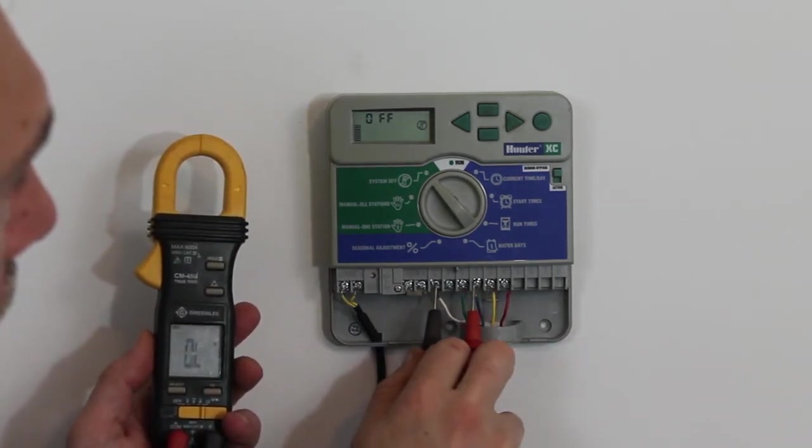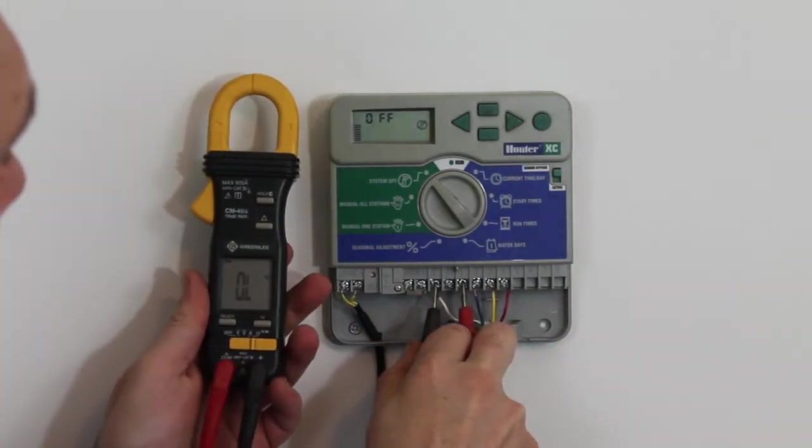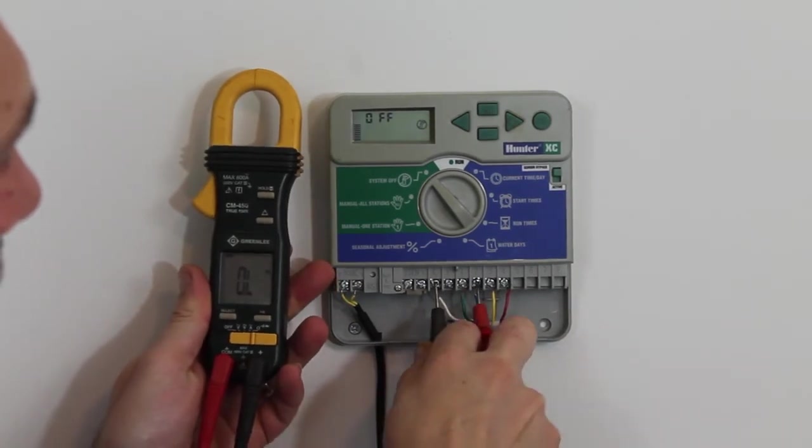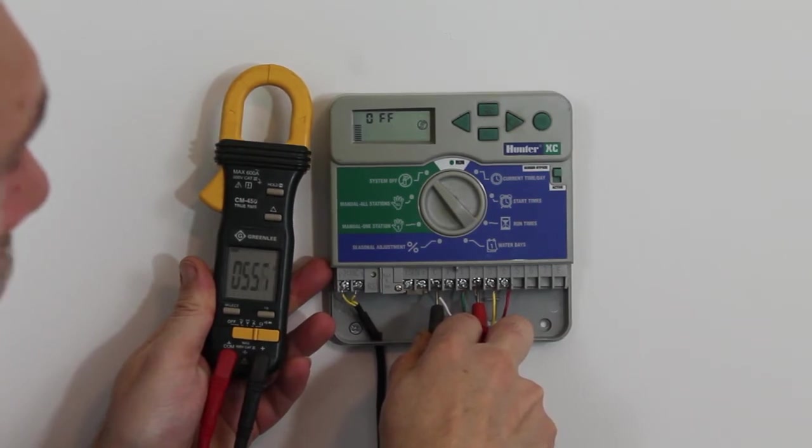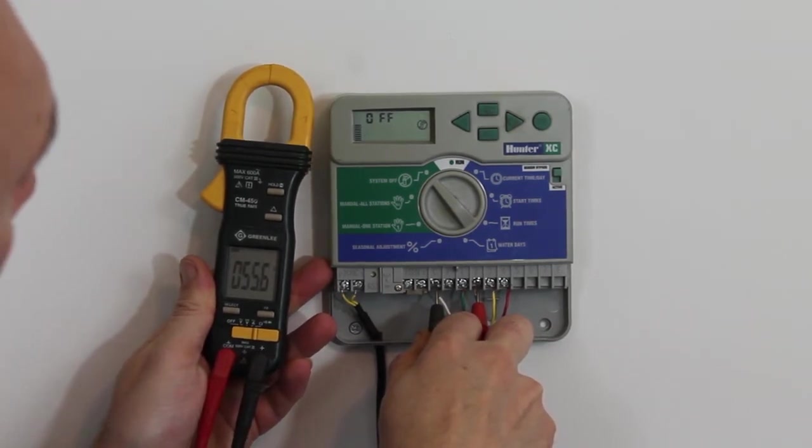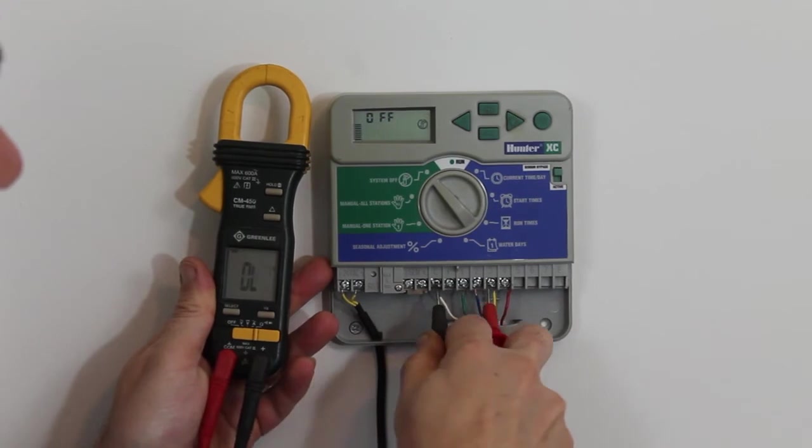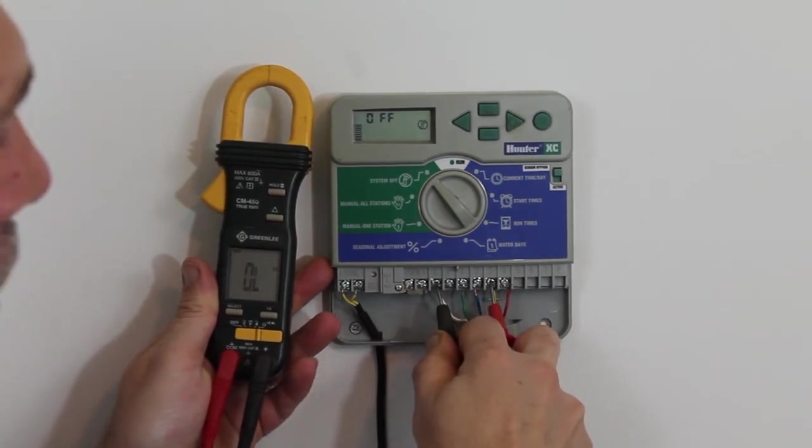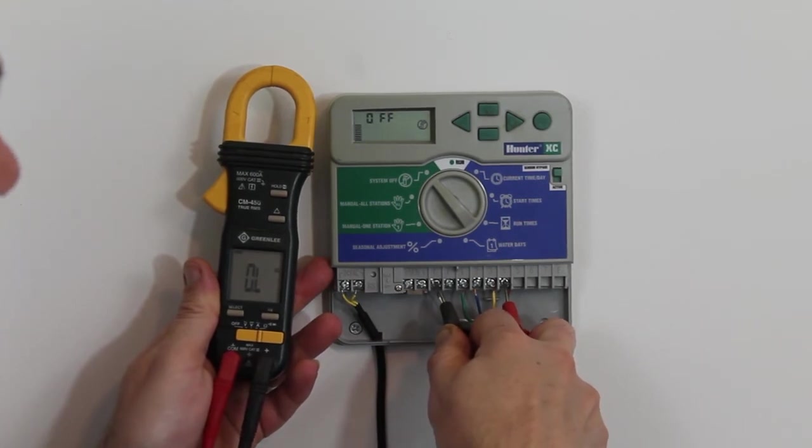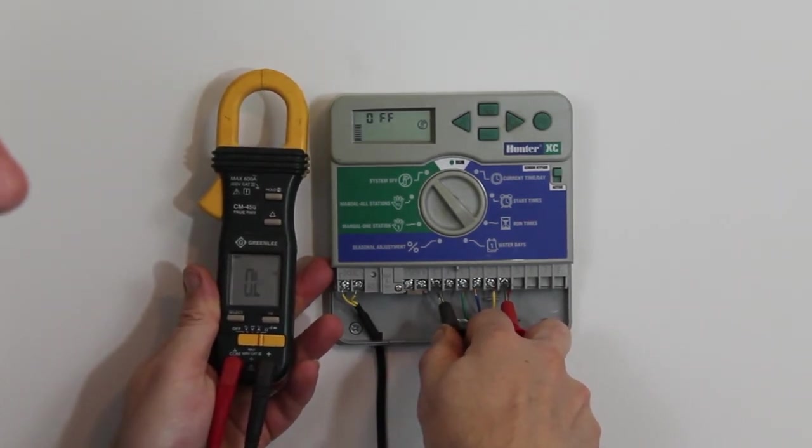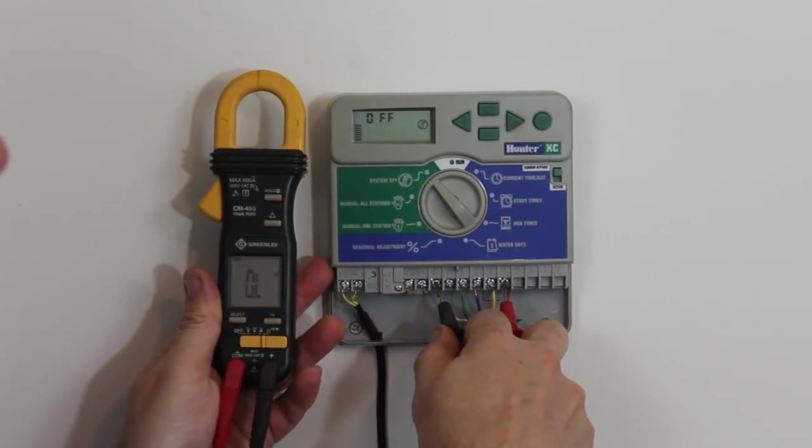You can start off by touching your leads to each one of the circuits. And there we go. On zone number two, I'm picking up about 55 and a half ohms. But I always make sure that I go ahead and touch my leads to every one of the circuits just to make sure that all the readings are at least the same or what we're expecting them to be.